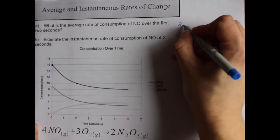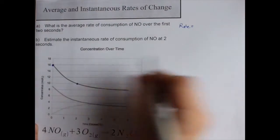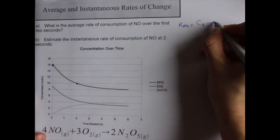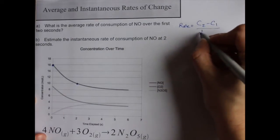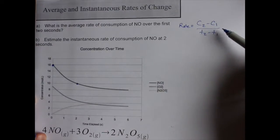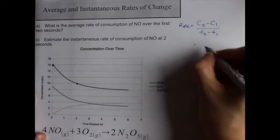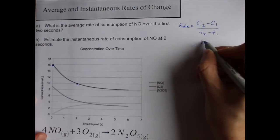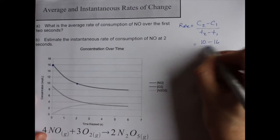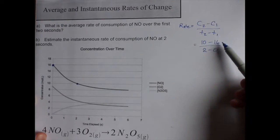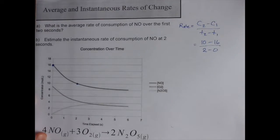So the rate of a chemical reaction, the average rate of consumption of NO in that case, is going to be C2 minus C1 over T2 minus T1, which should remind you of the slope of a line, Y2 minus Y1 over X2 minus X1. Here we can just fill in the concentrations and times. That's 10 minus 16 and 2 minus 0 because it was 10 moles per liter at 2 seconds and 16 moles per liter at 0 seconds.